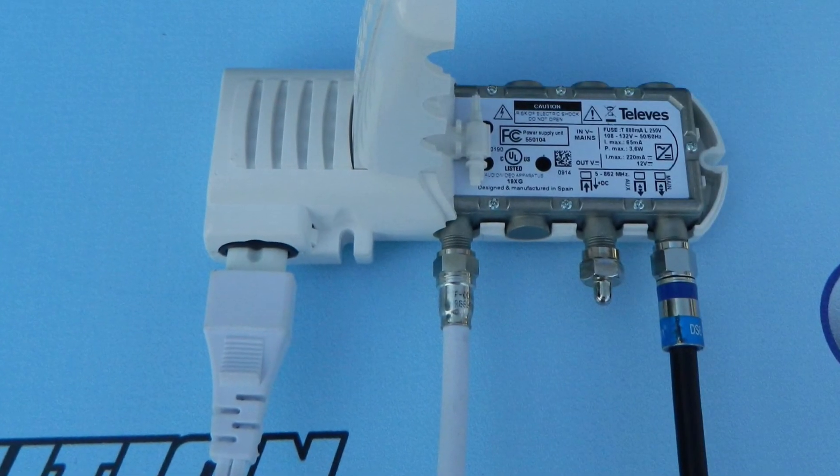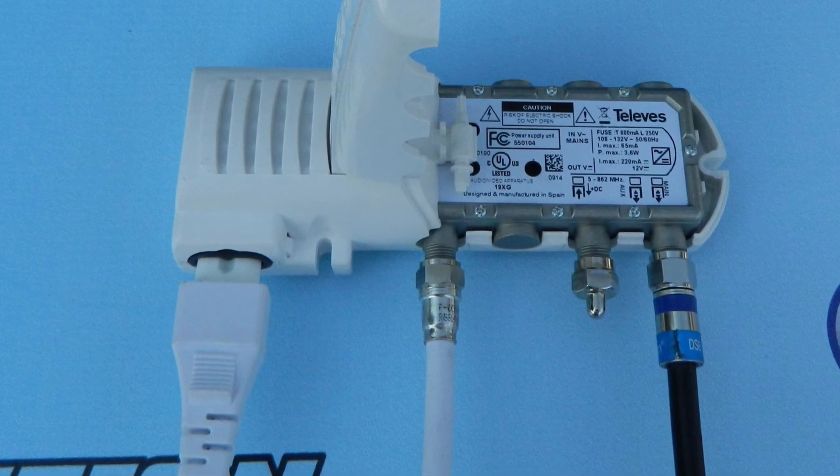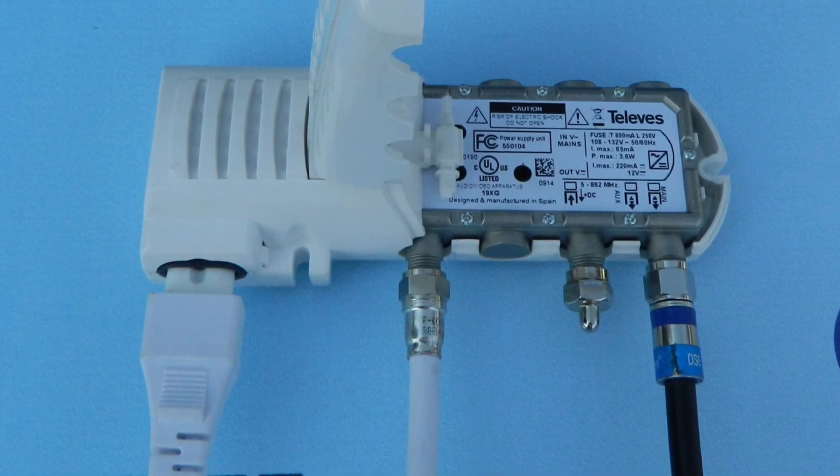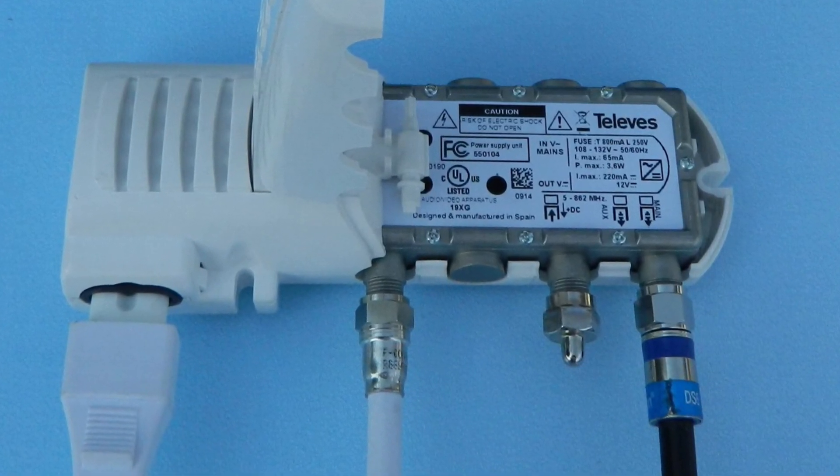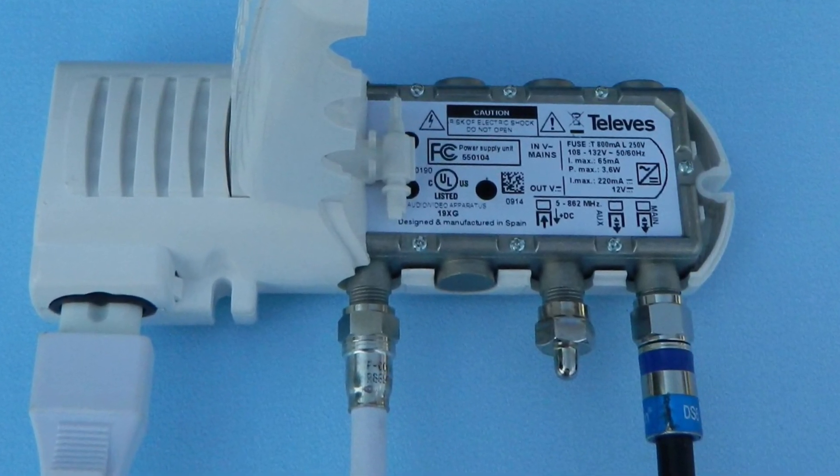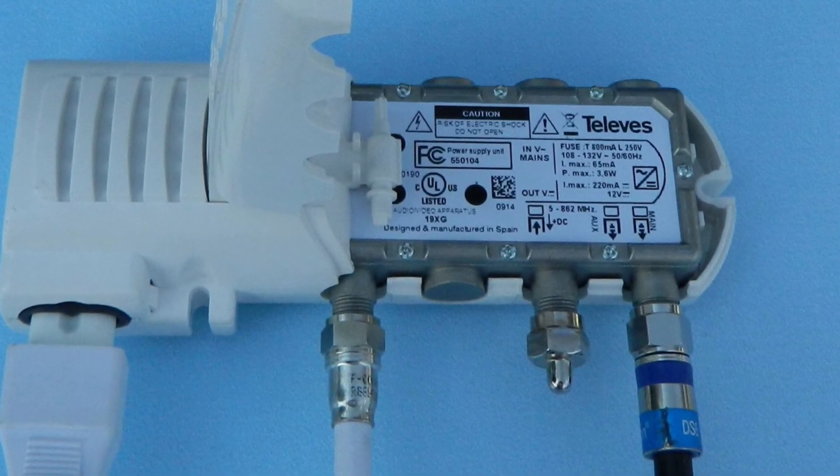If you choose to use the built-in amplifier, you're going to need to connect the wire from the roof to the left side of the power injector and the wire to the TV to the right side. If you're not connecting a second TV, I recommend using a terminator in the inside connection.